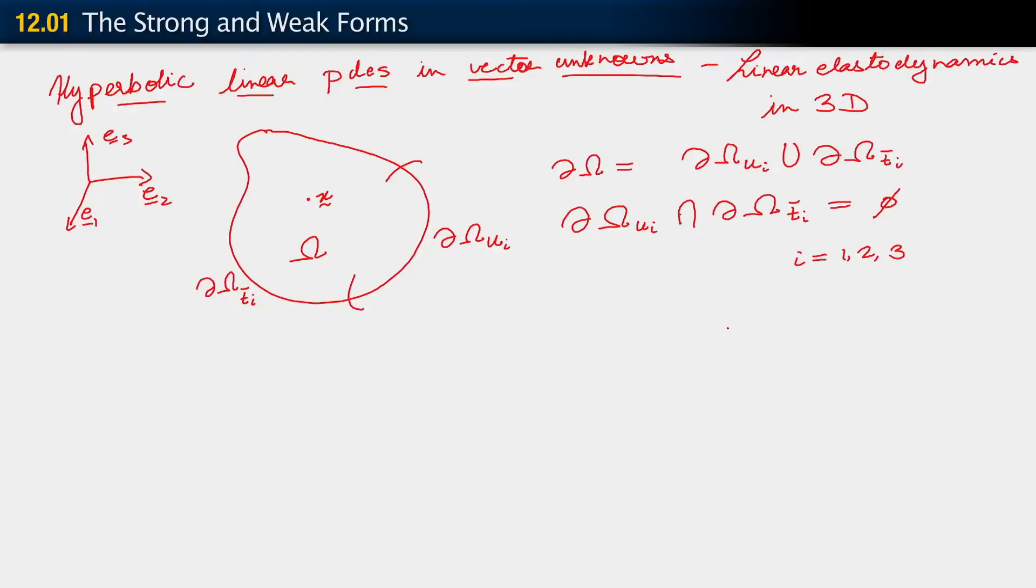I'm going to straight away put down the strong form of the problem. The strong form of the problem is the following. Now, given data u_gi, t bar i, f_i. In addition, we need some more data now. We need also other functions which I'm going to denote as u_i naught and v_i naught. We're going to use them for initial conditions.